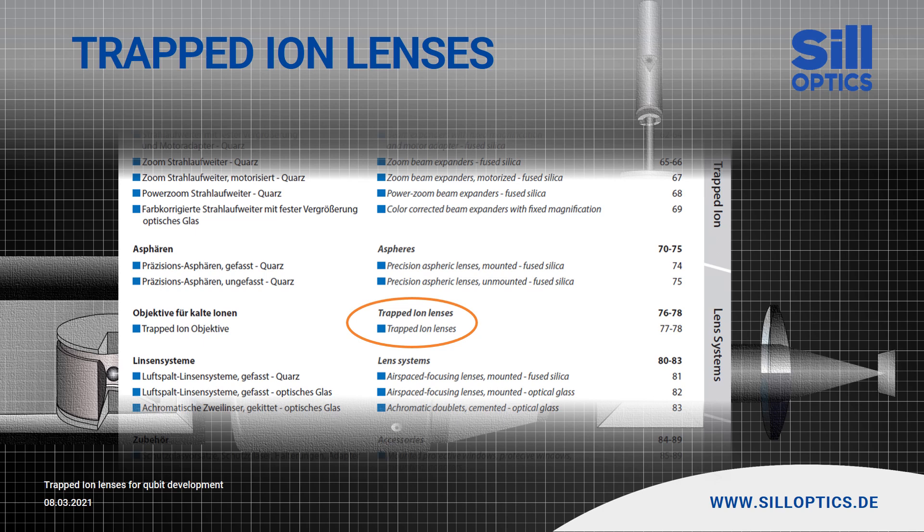SIL Optics is specialized in customized lenses. Therefore, it is worth inquiring about a suitable lens even if your experimental setup is very different. In this case, our technical team will calculate a preliminary design for you from which one or more prototypes can be manufactured in close consultation.